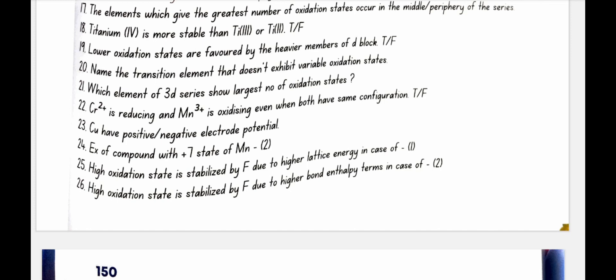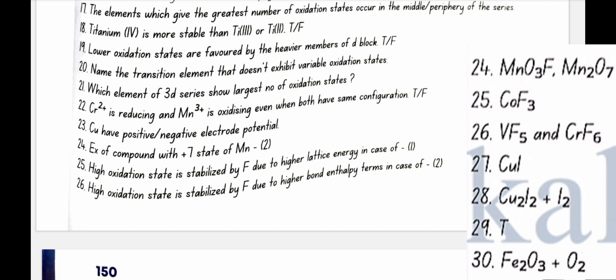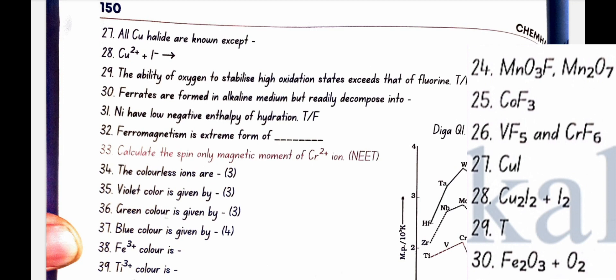Example of compound with plus 7 state of MN is MN2O7. High oxidation state is stabilised by F due to higher lattice energy in case of CuCoF3. High oxidation state is stabilised by F due to higher bond enthalpy in case of VF5 and CrF6. All copper halide are known except CuI2.